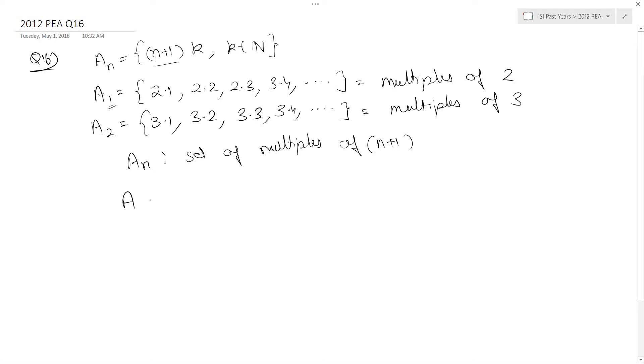A_1 intersection A_2 will be the set of multiples of both 2 and 3, which is the set of multiples of 6.